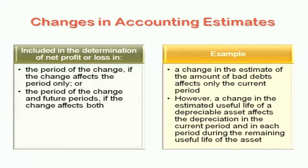Example: a change in estimate of bad debts. We were creating 2% bad debts; now we start creating 3% provision for bad debts. That 3% change you have to directly account as provision for bad debts at 3% and finish it off. You don't have to highlight that you have changed the estimate.